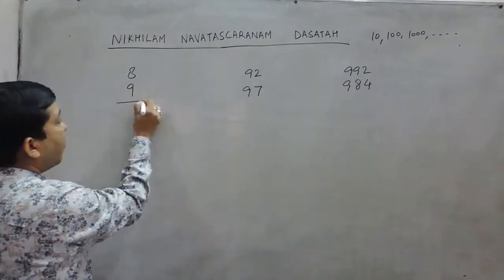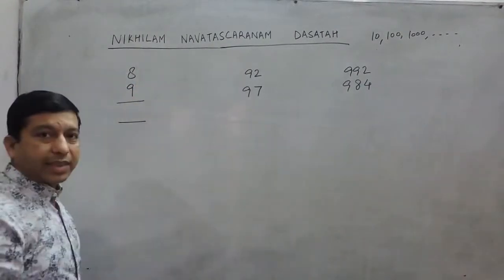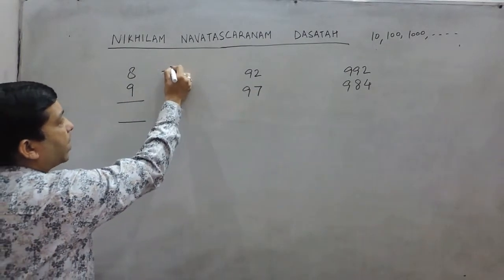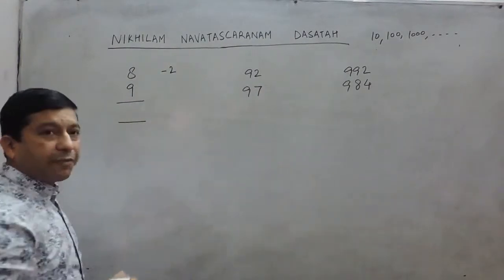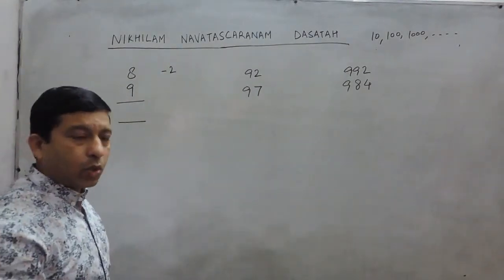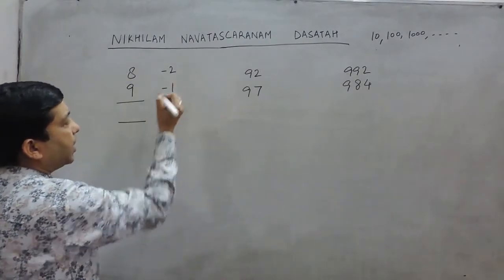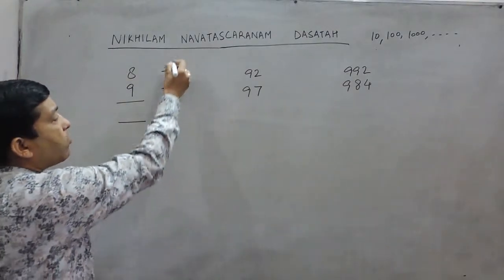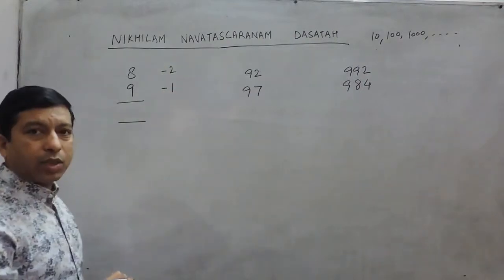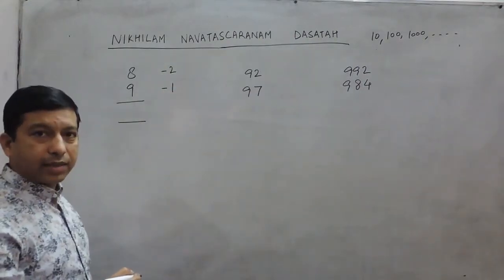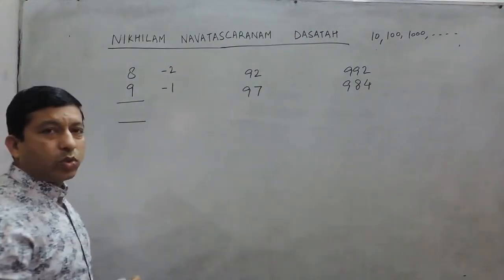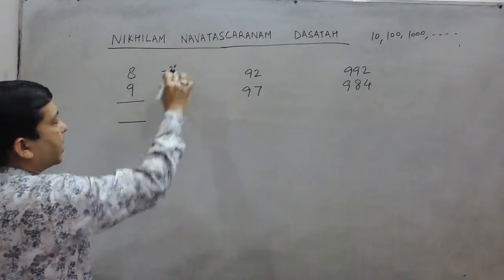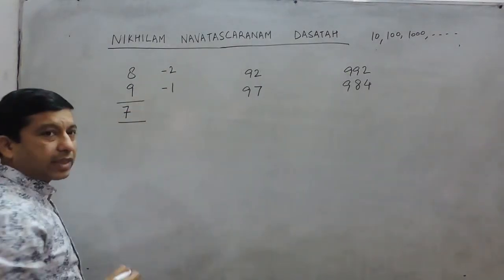When we talk about two digits which are near to 10, we know that the difference between 10 and 8 is 2, and the difference between 10 and 9 is 1. We have to subtract these two numbers from 10. The addition of these two comes out to be 3. If we subtract it from 10, it comes out to be 7.